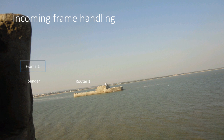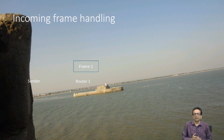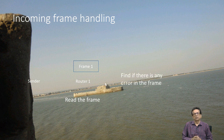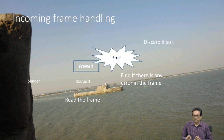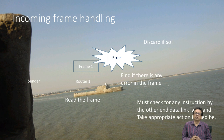When the frame is sent — remember our model — we have a sender and there are two routers. Whenever a sender sends a frame, router one reads the frame and finds out if there is any error. If there is an error, it discards it, but if there is no error, what does it do?